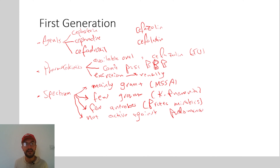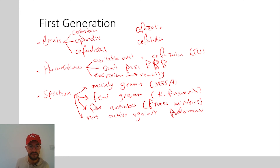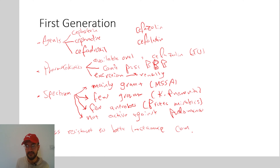They are not active against Pseudomonas. Regarding Pseudomonas, the third and fourth generation cephalosporins are active against it — other generations are not. The first generation cephalosporins are less resistant to beta-lactamase enzyme than other generations of cephalosporins.